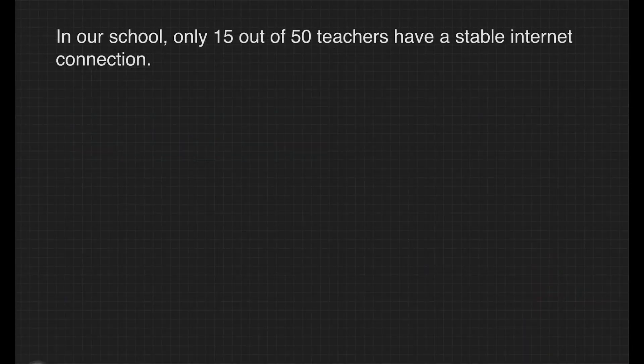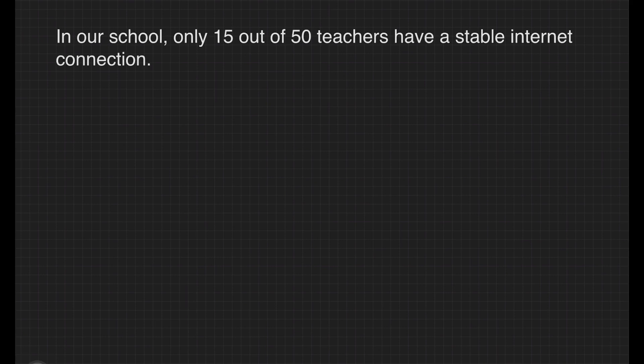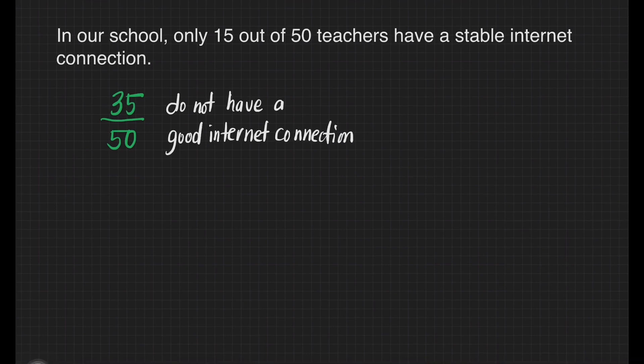We'll have this example. In our school, only 15 out of 50 teachers have a stable internet connection. This would also mean that 35 out of 50 teachers do not have a good internet connection. The comparison of the numbers of teachers who do not have a good internet connection with those who do can be written as a ratio of 35 is to 15.